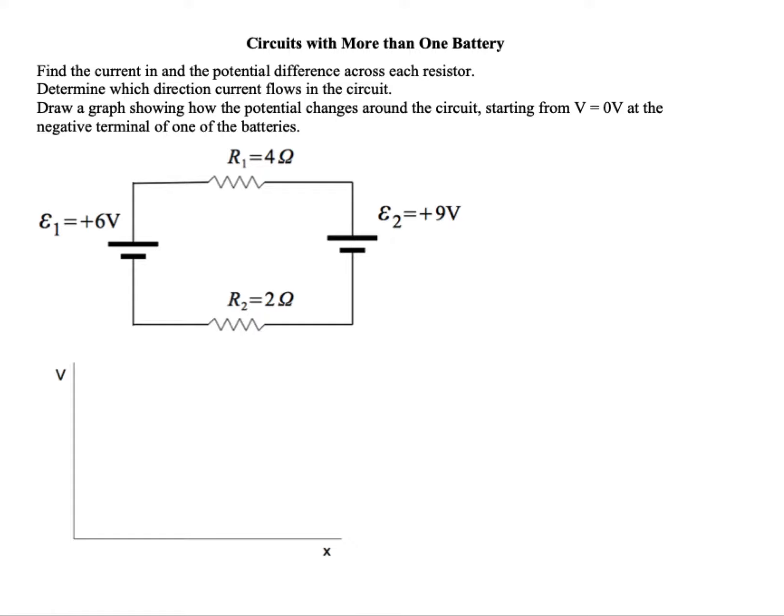Here we have more than one battery in our circuit, and our batteries are connected such that the positive plate of one is connected to the positive plate of another. The problem says: can we find the current and the potential difference across each resistor, determine which direction current flows in the circuit, and draw a graph of how the potential will change around the circuit starting with V equals zero volts at the negative terminal of one of the batteries. One of the first things we want to do is take a look at our batteries and see which one is going to push charges harder in a particular direction.